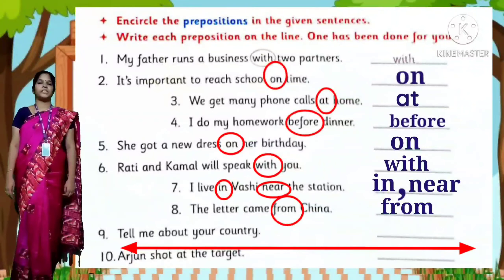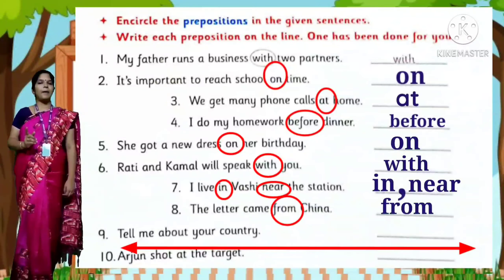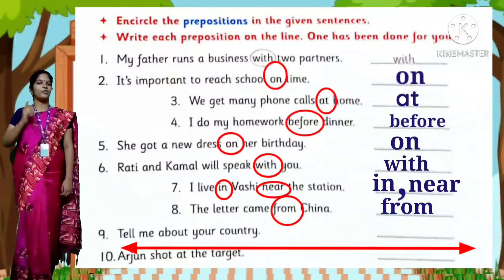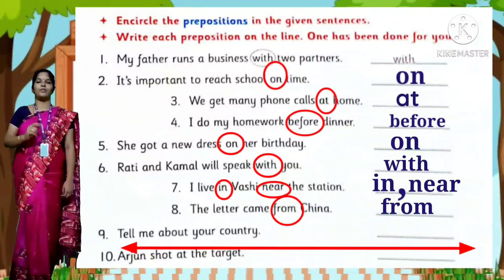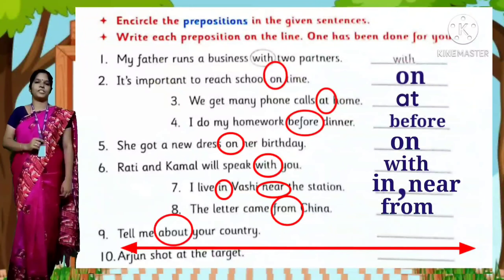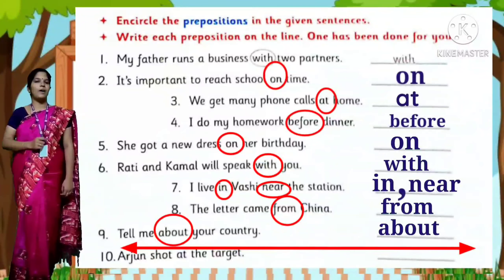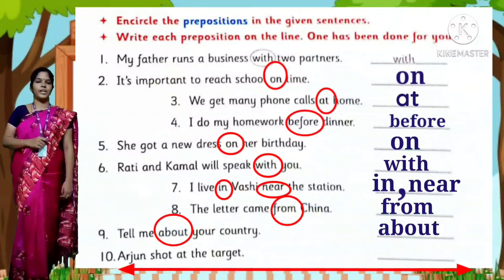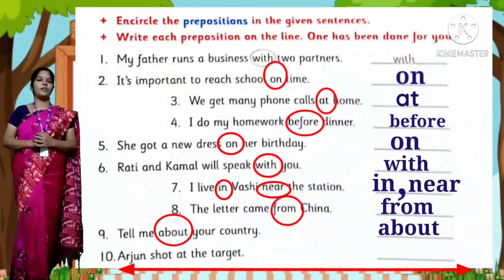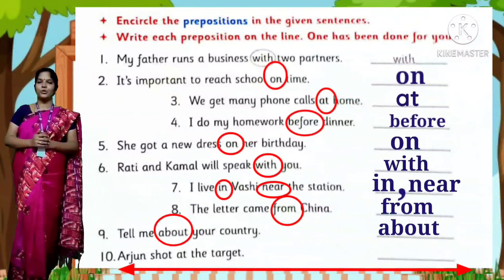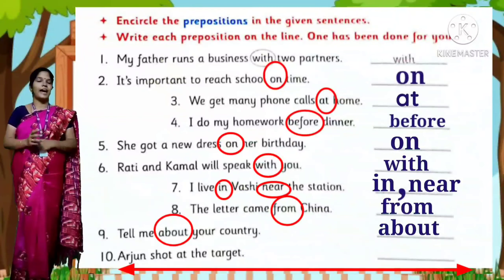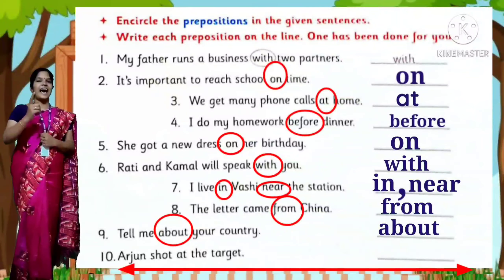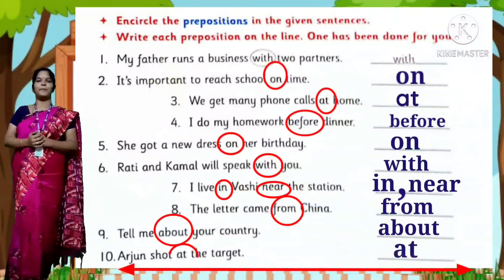Ninth question: Tell me about your country — 'about' is the preposition, circle it. Tenth question: Arjun shot at the target — 'at' is the preposition, circle it.